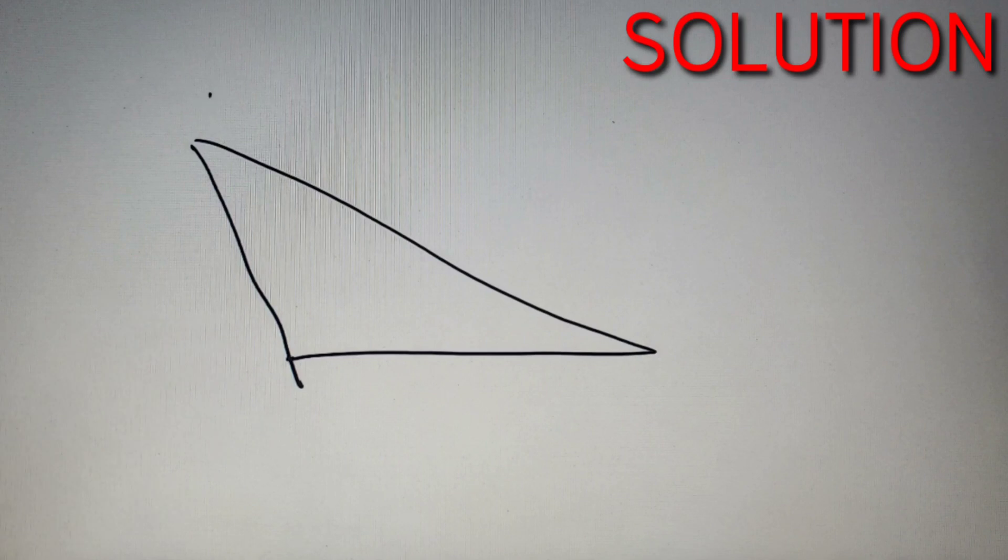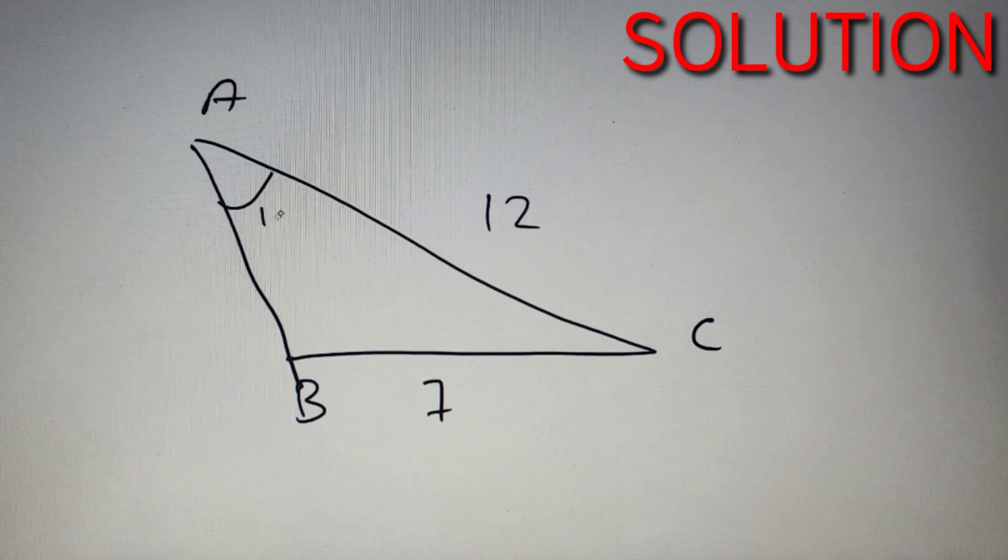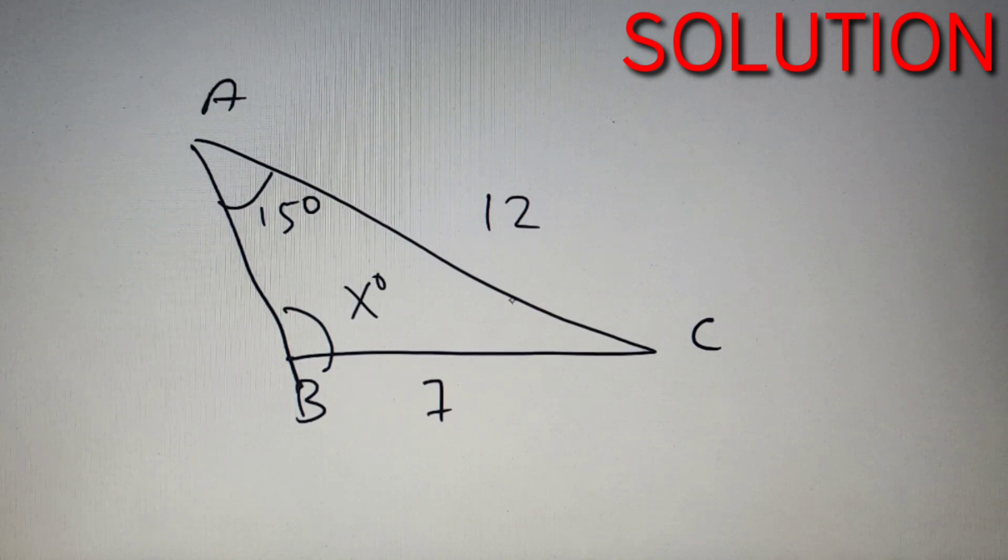According to our given problem, we are given a triangle ABC in which the lengths of the side AC and BC are given as 12 and 7 respectively, and the value of angle A is equal to 15 degrees and we have to calculate the value of angle B which is given as X degrees. Now this question is direct application of sine rule, we can simply apply A by sine A is equal to B by sine B.